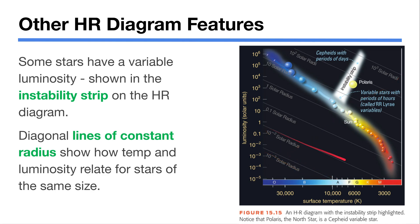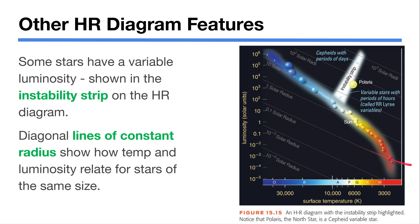You'll also see diagonal lines drawn on HR diagrams representing stars of the same size. A 3000 K star that's one-tenth the size of the sun will be very faint, while a 30,000 K star of the same radius will be much more luminous. These lines show that trade-off. Reading diagonally along one of these lines on an HR diagram means you're looking at stars of the same size.